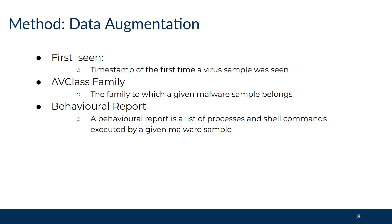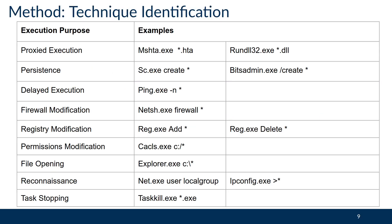There are a number of different characteristics that we use to augment the data contained by these malware hashes, added for the purpose of making analysis more effective. First seen is used for determining the first time a virus sample was seen. AV class family is the family to which a malware sample belongs — this is the state of the art in malware research from a paper in 2017. Behavioral reports list processes and shell commands executed by a given malware sample. We used iterative classification in order to identify execution purposes from these behavioral reports.